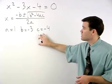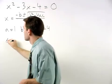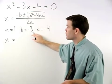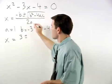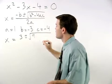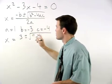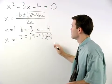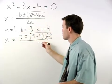Plugging these three values in for a, b and c into the quadratic formula, we have x equals negative b, which is negative of negative 3 or positive 3, plus or minus the square root of b squared, which is negative 3 squared, minus 4 times a, which is 1, times c, which is negative 4, all over 2a, which is 2 times 1, or 2.